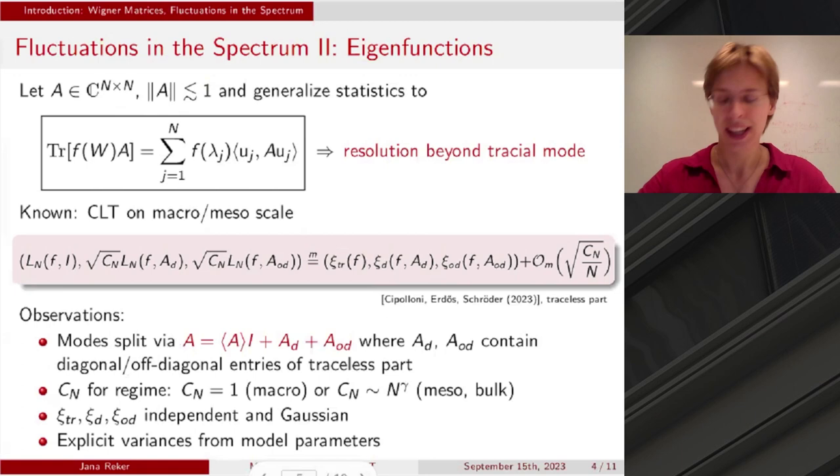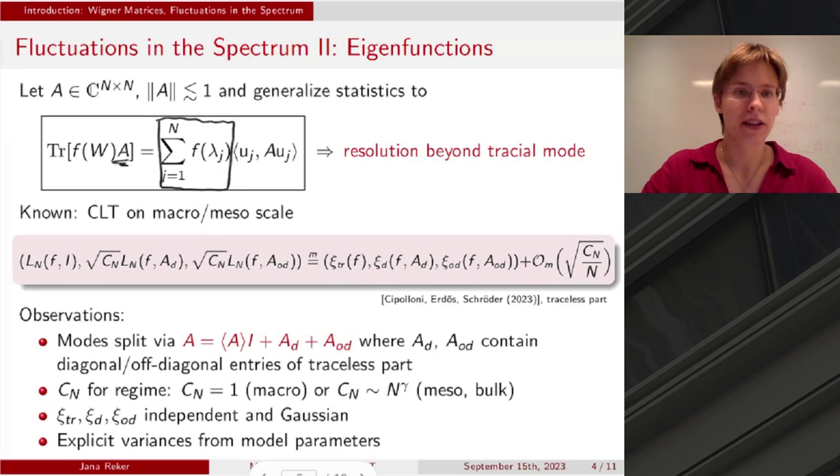And to complete this little study of the literature, let me also show you one more result here, which is by Cipolloni, Erdős, and Schröder. So you can see the statistic that they're looking at kind of contains the ones that we previously looked at. And what they kind of do is that this is, in a sense, inherently tracial, in the sense that this has, for this little smaller box, only involves the eigenvalues, but not the eigenvectors. And by testing against the bounded deterministic matrix here, you can start involving also the eigenvectors into the statistics. And in a sense, you obtain a resolution that goes just beyond this tracial regime.